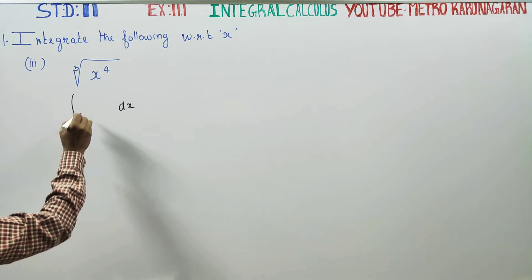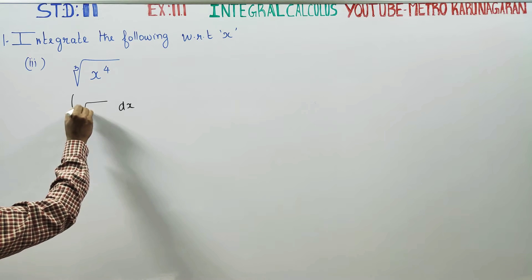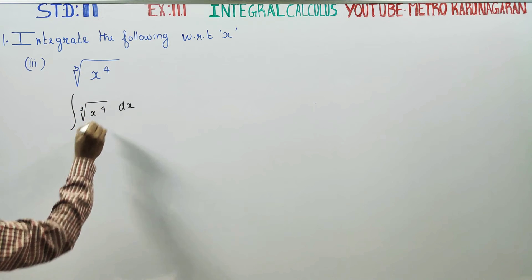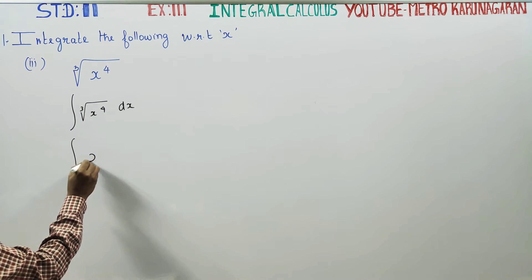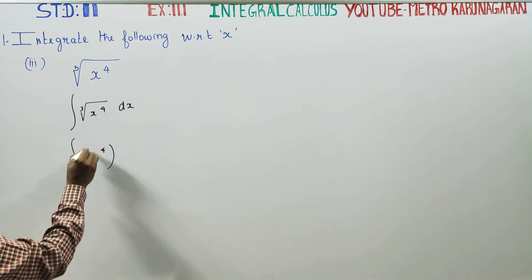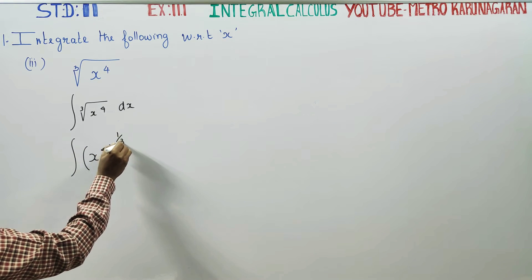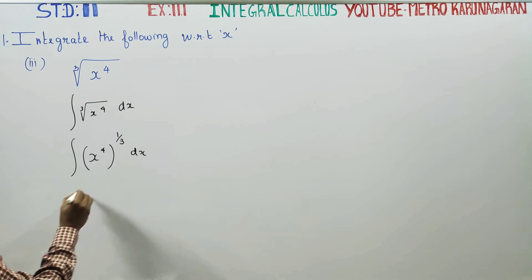It is an operator in the problem. Cube root of x power 4 can be written as x power 4 whole power 1 by 3 dx.